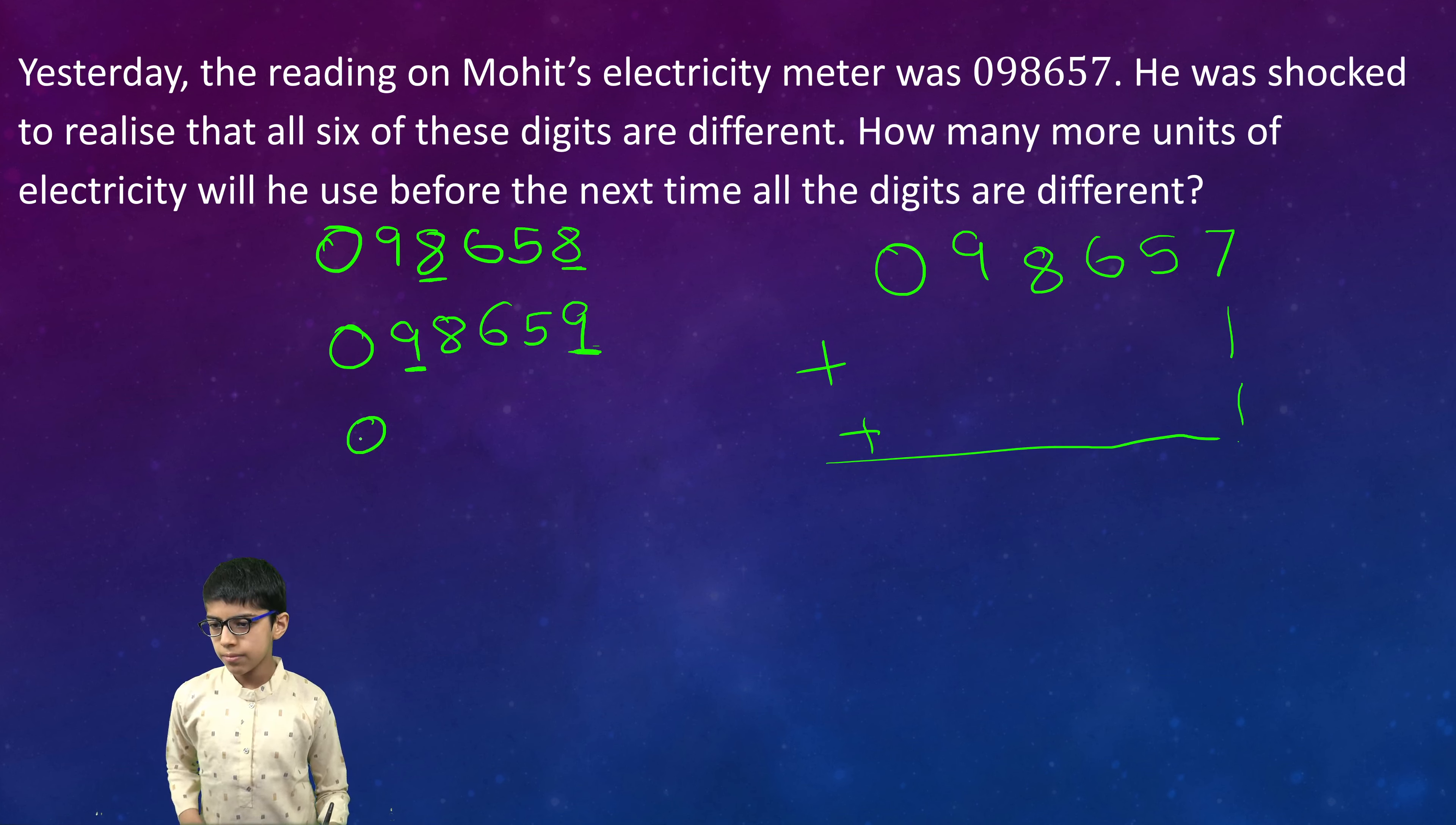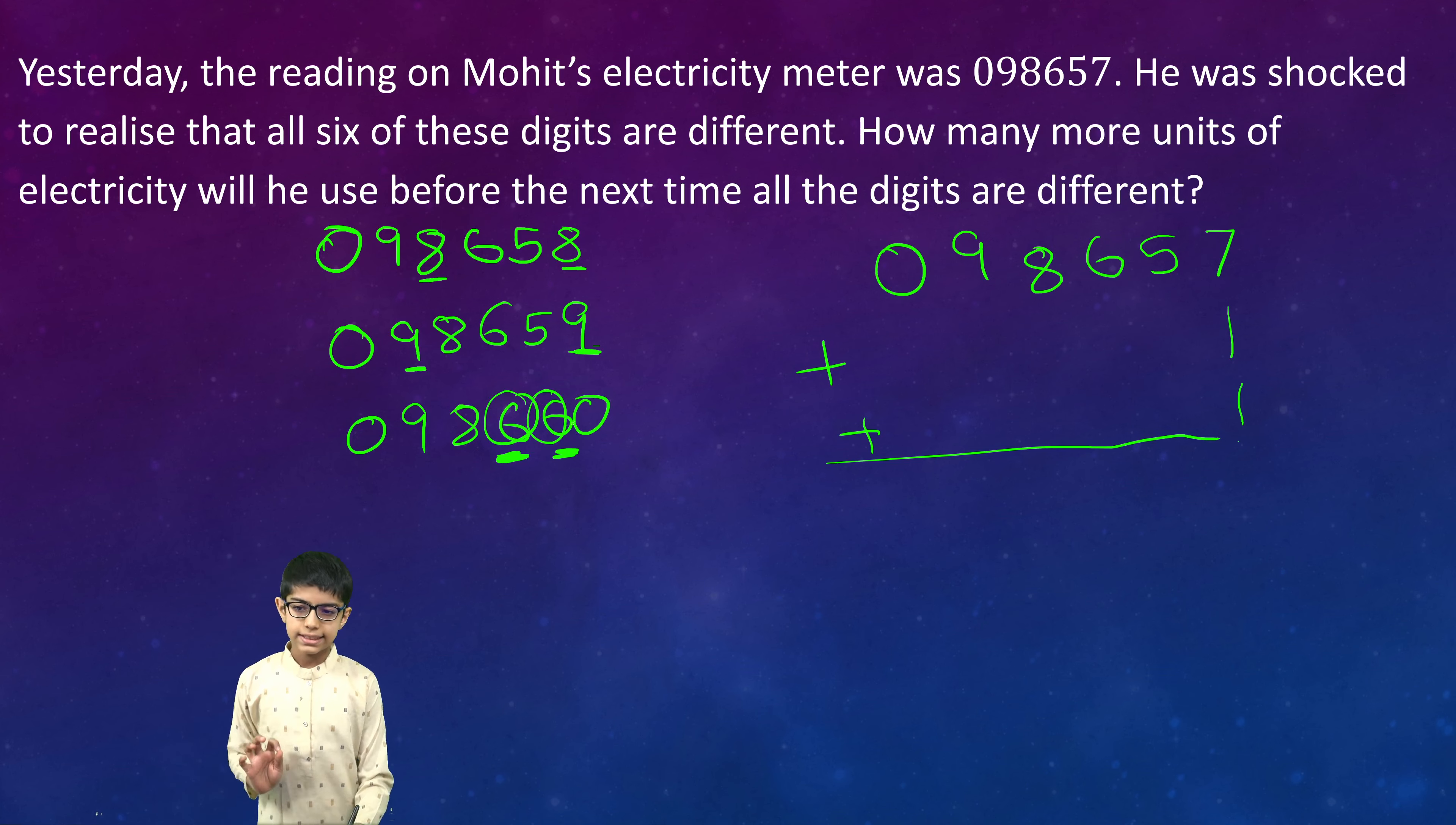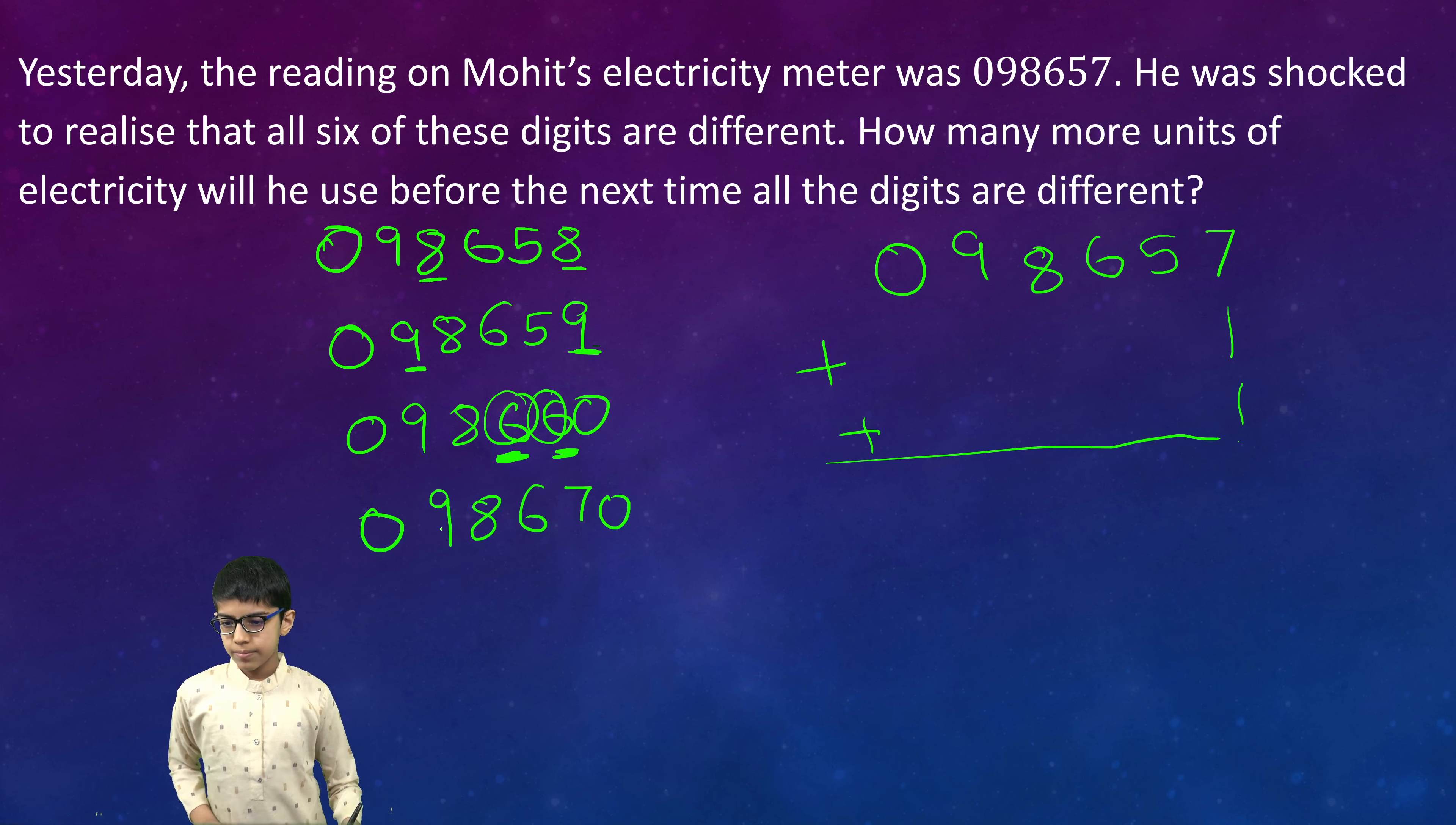We add one again to get 098660. Now 6 and 6 match again. If I take the tens digit as 6, then the number won't be possible. So the next number I shall consider is 098670.